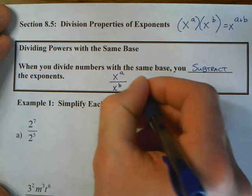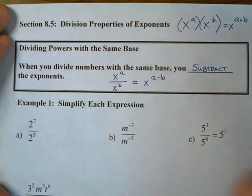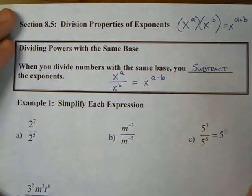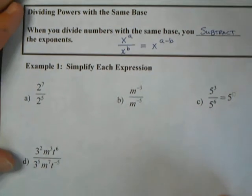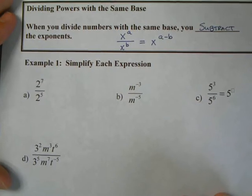So our idea here is if we have x to the a divided by x to the b, we're going to subtract and say a minus b as our new exponent. Whether it's negative or positive, we'll deal with that later.